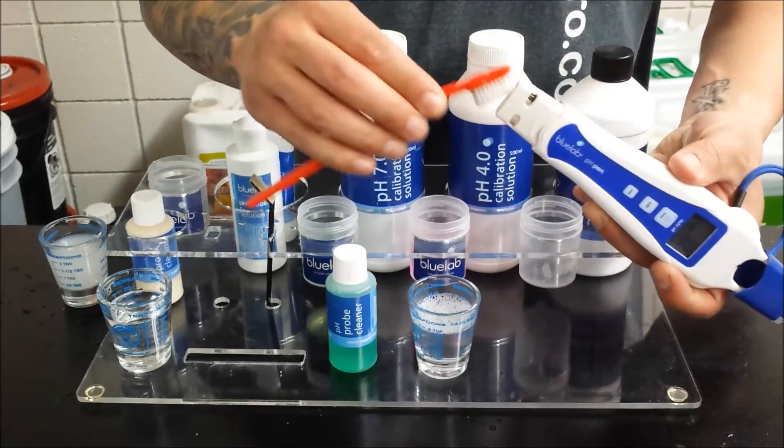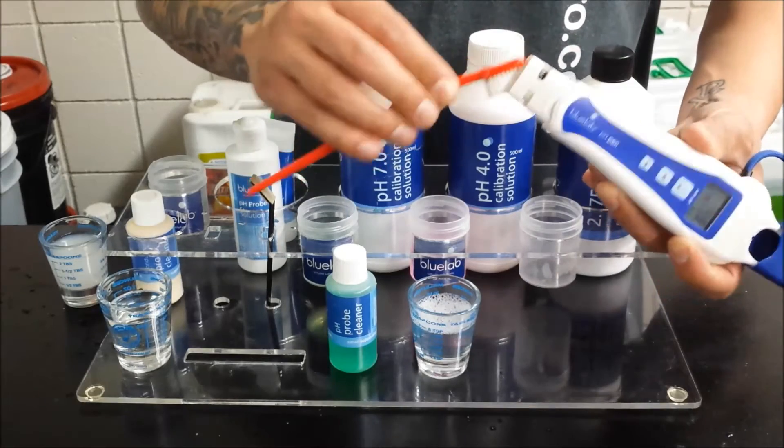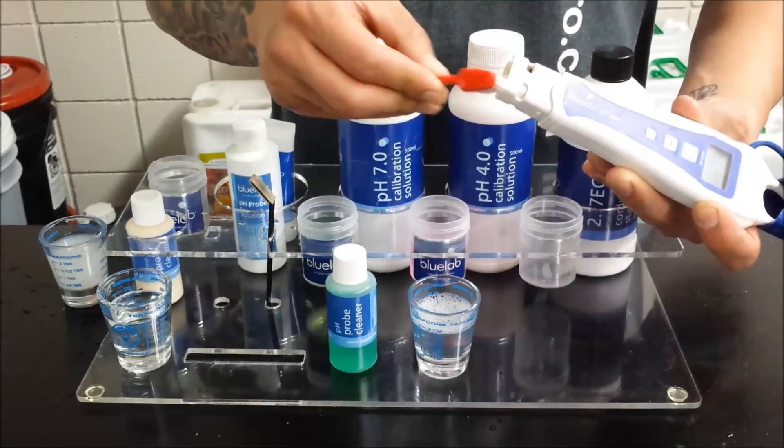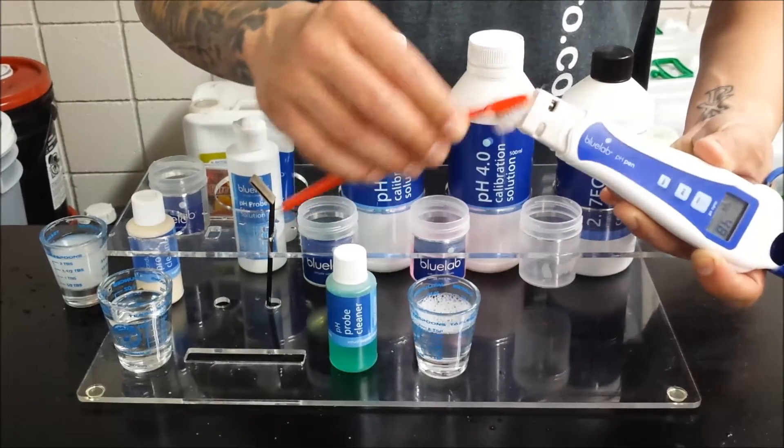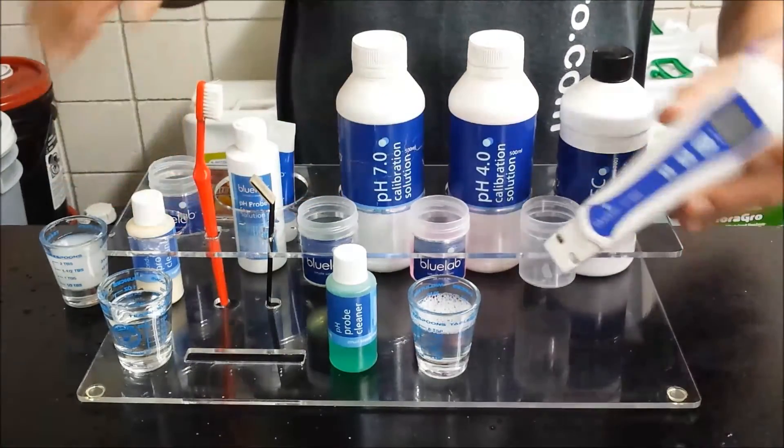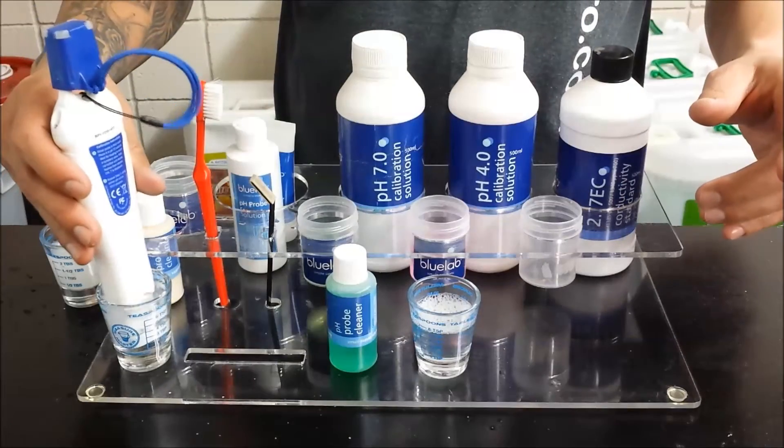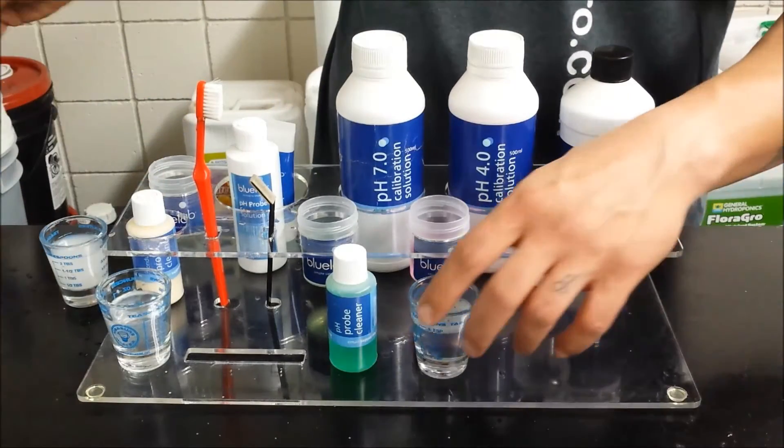You can use a toothbrush for this. Just lightly scrub with the bristles around the bulb. Make sure and get any nutrient reservoir residue off of it. Rinse it off in some water.